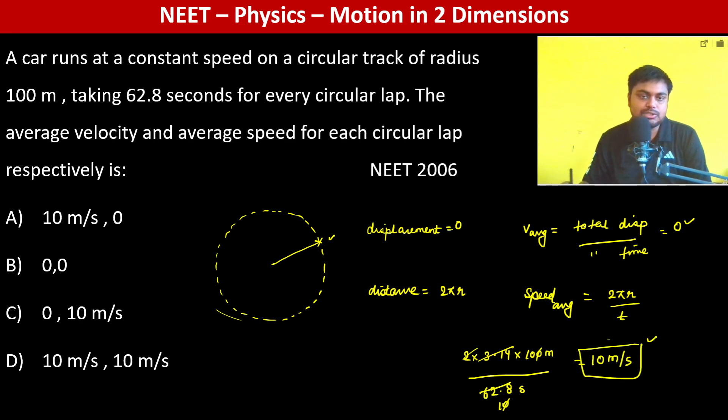So 10 meters per second is the average speed and 0 is the average velocity. Therefore C is the option.